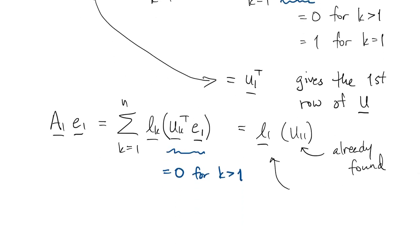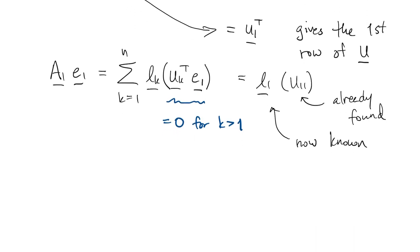But we already found it. We already found the first row of U, so we know it. And now that means that we know the first column of A1 and we know U11, so now we can consider L1 to be known. We can compute L1, the first column of L.